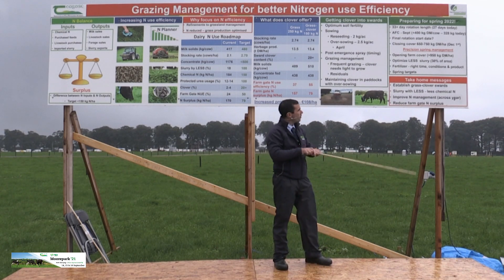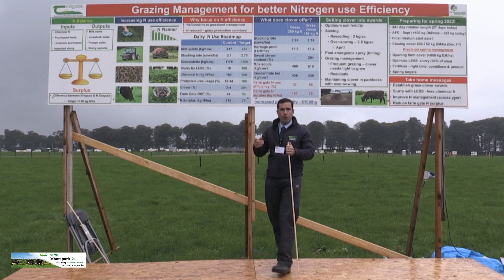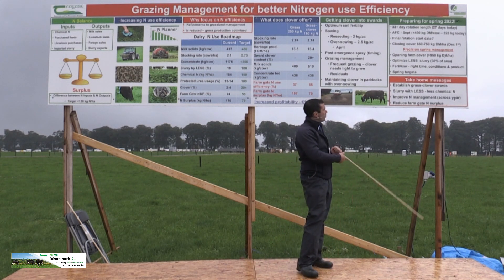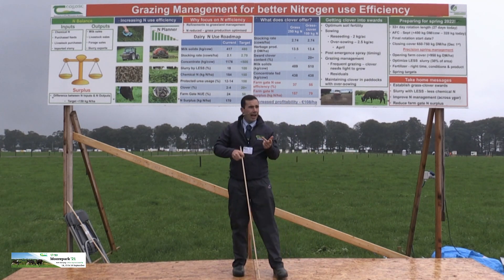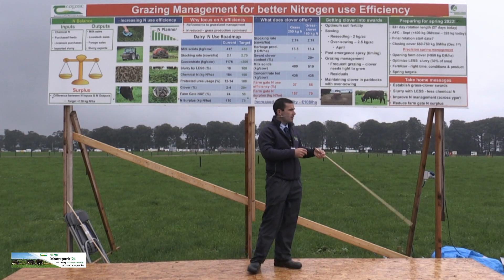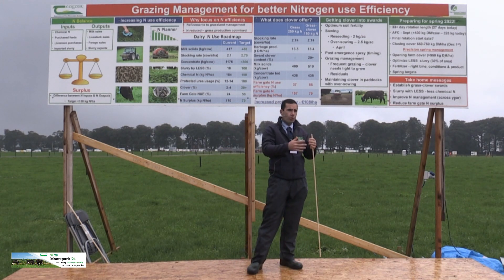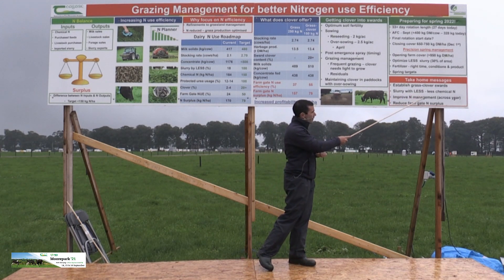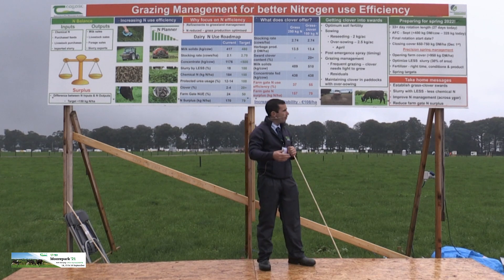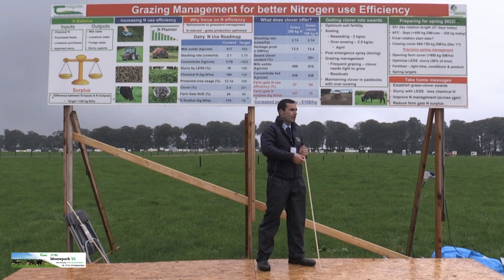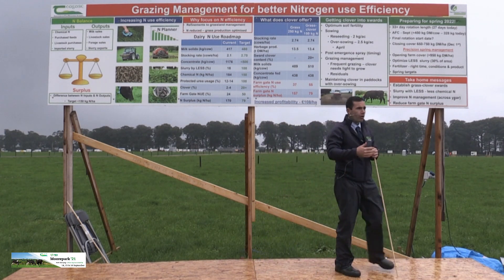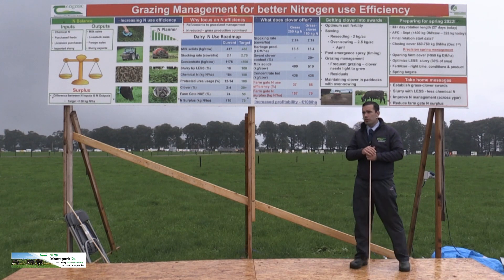Target 30% of the farm with slurry using low-emission spreading equipment, with the right timing and right product. Look at the predictive forecast, Elody's grass growth model, and use protected urea. Hit those spring targets — opening farm cover, residuals, and timings. The take-home message: the role clover can play on our farms is key, along with using slurry with low-emission spreading to reduce chemical fertilizer, improving nitrogen management using the nitrogen planner in the PastureBase app, and reducing our overall nitrogen farm surplus.